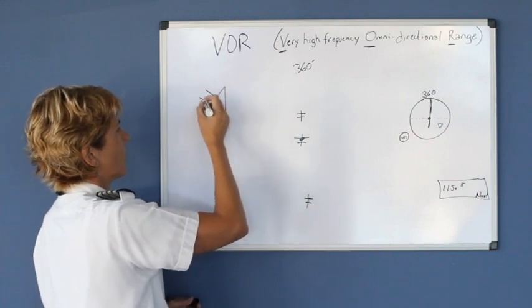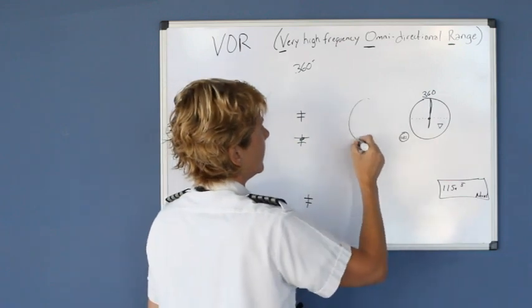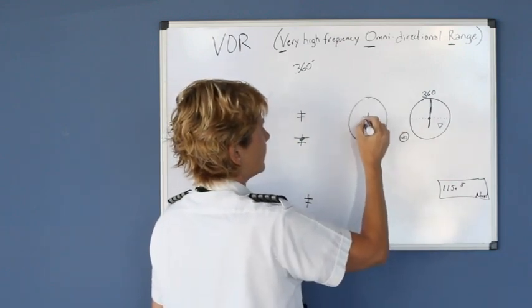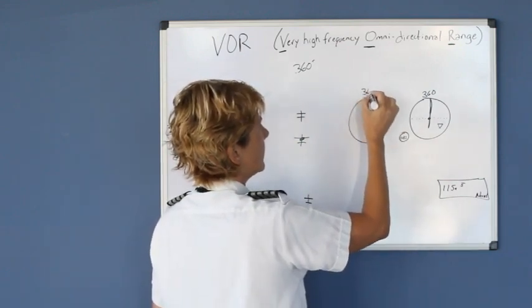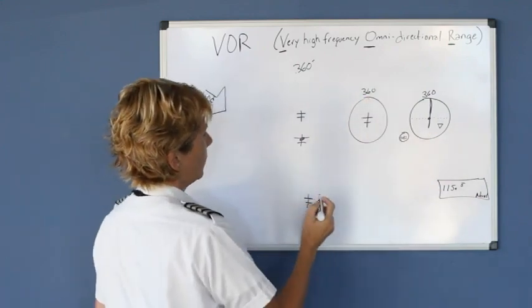We'll say the wind is coming from the northwest and on your heading indicator while you were flying 360, in order to fly that course, the wind blew you off course.